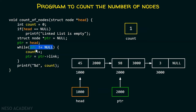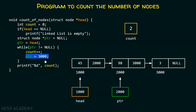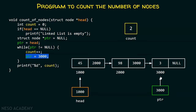We will again check: is ptr equal to null? No, ptr is still not equal to null. We get inside the while loop and increment the count, meaning the second node has been reached. After that, we again execute ptr equals ptr->link. The link part of this node gives us 3000, and eventually ptr contains the address 3000 after this line of code — it will now point to the third node of the list.